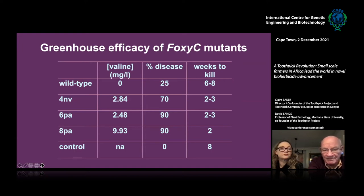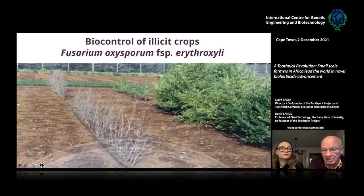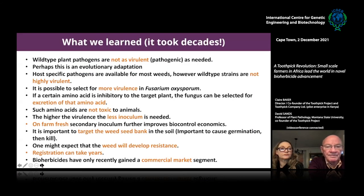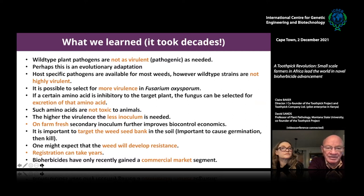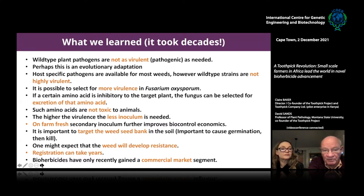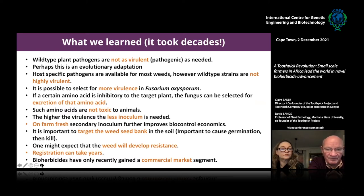Here is a cocaine plant — Erythroxylum — and this is what selected fungi can do when you put them in the soil with that plant. What have we learned? Basically, fungi taken from the field are not as virulent as we'd like, but we can make them more virulent by getting them to make amino acids. We can test them to make sure they aren't producing bad toxins. Amino acids are not toxic to animals.